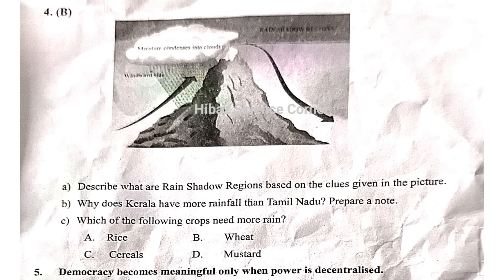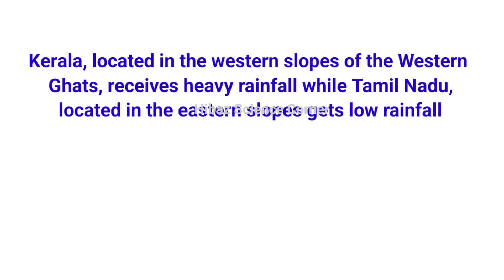Why does Kerala have more rainfall than Tamil Nadu? Kerala is located on the western slope of the Western Ghats, while Tamil Nadu is located on the eastern slope, which is the rain shadow region, and therefore receives less rainfall.